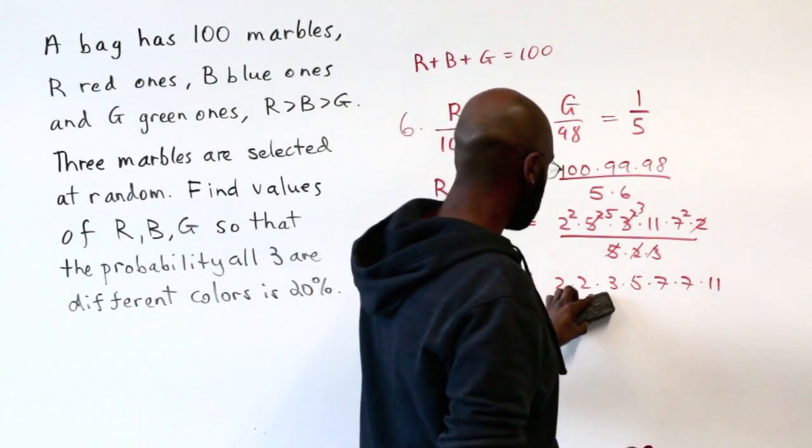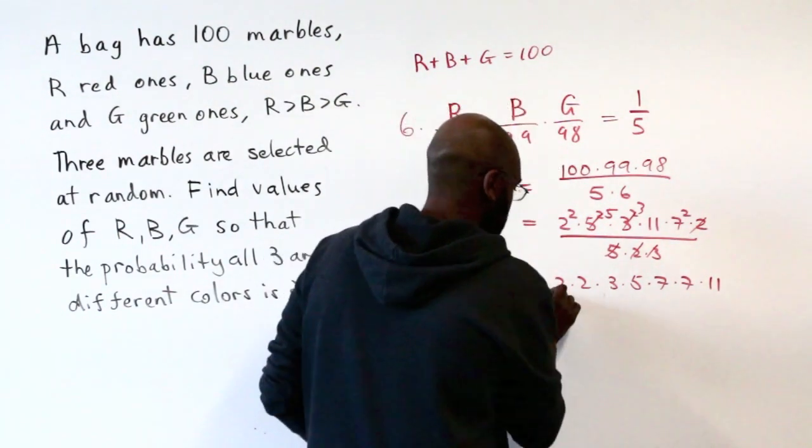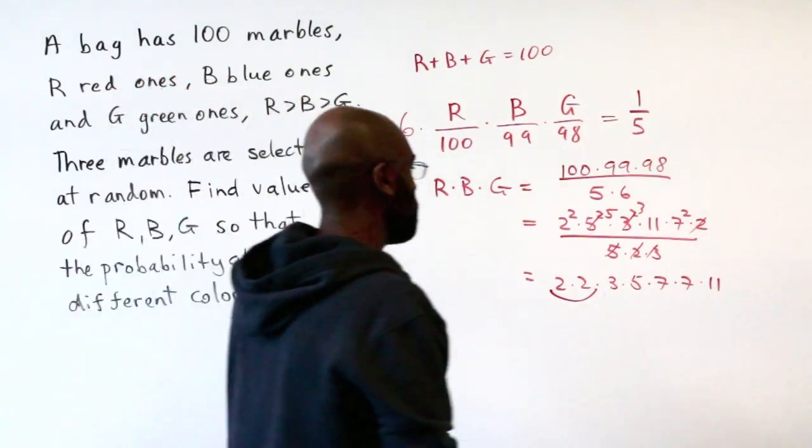So whatever groupings we pick for R, B, and G, we must have the 2 and the 2 together. Now you can play around.